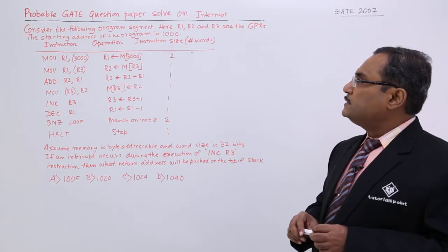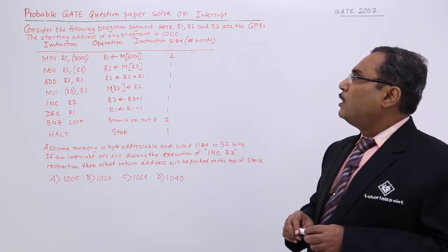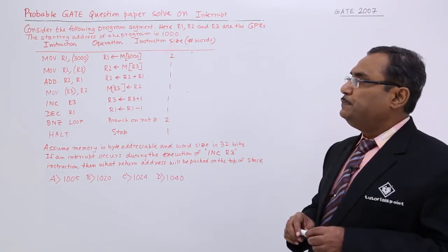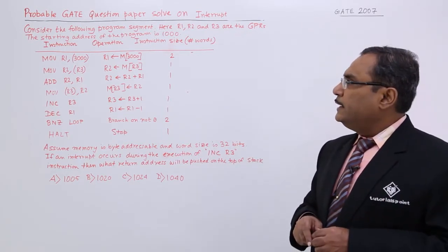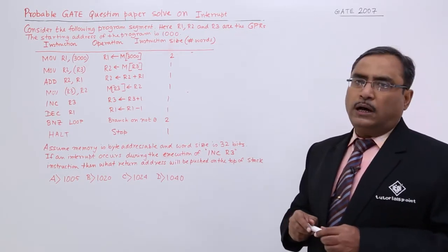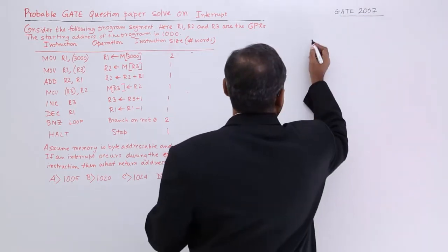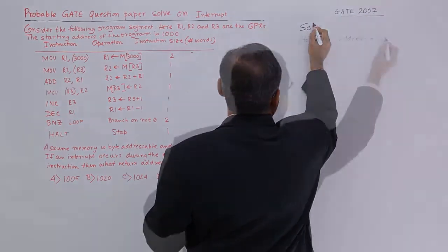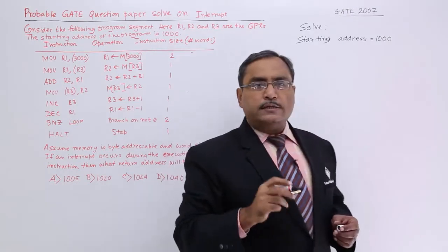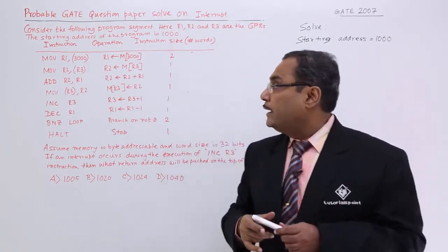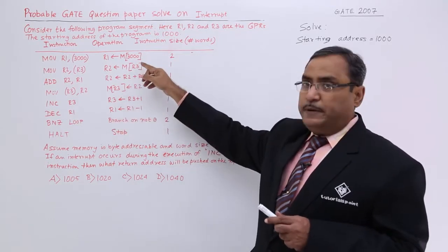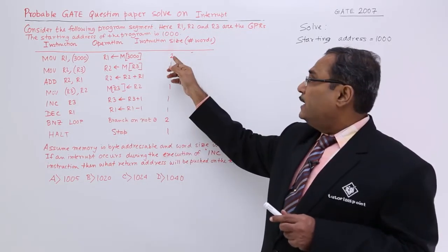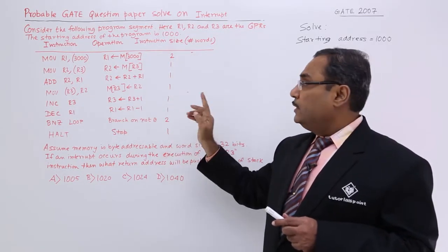Consider the following program segment here R1, R2 and R3 are the GPRs general purpose registers. The starting address of the program is 1000. Let me do a sketch here. So starting address is 1000, it is confirmed. The instruction sets are given with the respective comments and the size they have given.